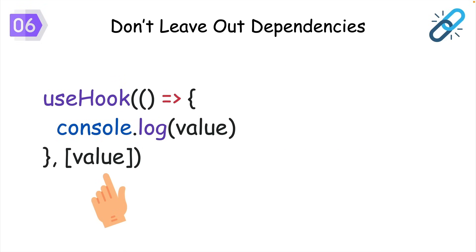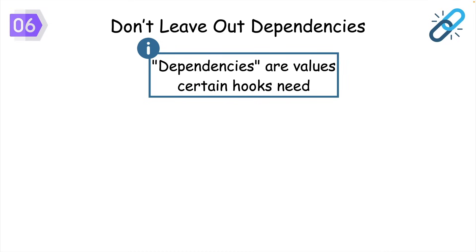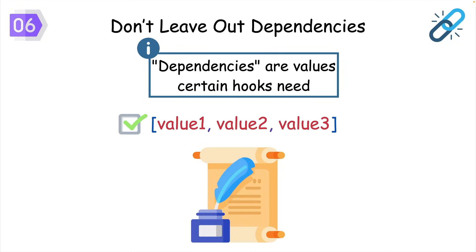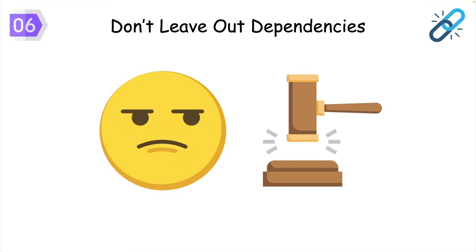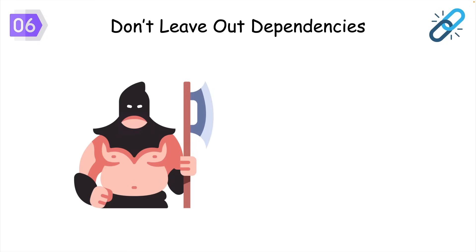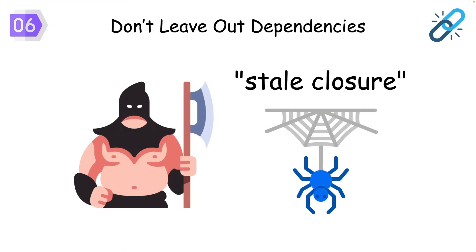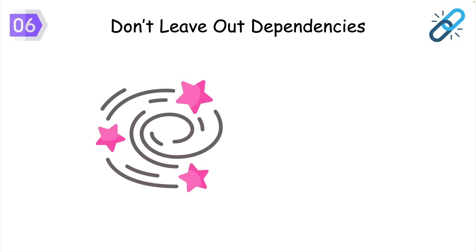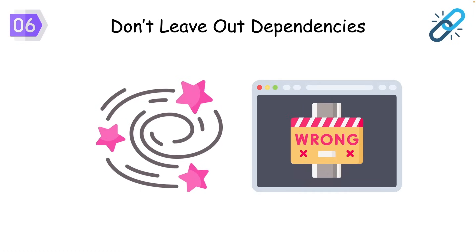Dependencies in React can be annoying. Dependencies are values that hooks need, and these have to be manually written out in an array. And what's worse is that these hooks will punish you if you don't add them. This cruel and unusual punishment is known as a stale closure. It causes weird behavior, such as your UI not displaying the correct data.